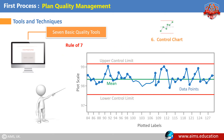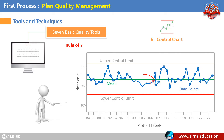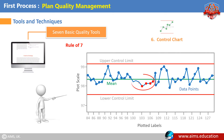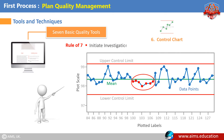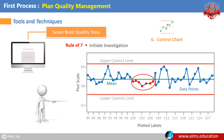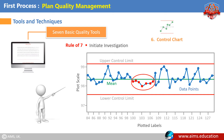The Rule of Seven: If seven or more consecutive data points fall on one side of the mean, then an investigation must be initiated to find out the reason, even if these points fall within the control limit. This is known as the rule of seven.